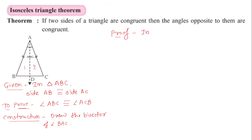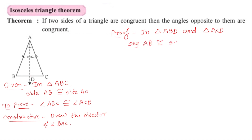We will consider triangle ABD and triangle ACD and show they are congruent. First: segment AB is congruent to segment AC — this is given. Second: angle BAD is congruent to angle CAD — the reason is construction, since AD bisects angle BAC.